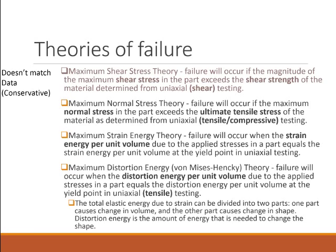The second theory to consider is the maximum strain energy theory. The idea is that strain energy determines when failure occurs. You perform uniaxial testing, figure out the amount of strain energy that caused the uniaxial piece to fail, and then apply that as the maximum energy the part can hold. The problem with this one is, again, it doesn't match the data, so we're going to discard this.